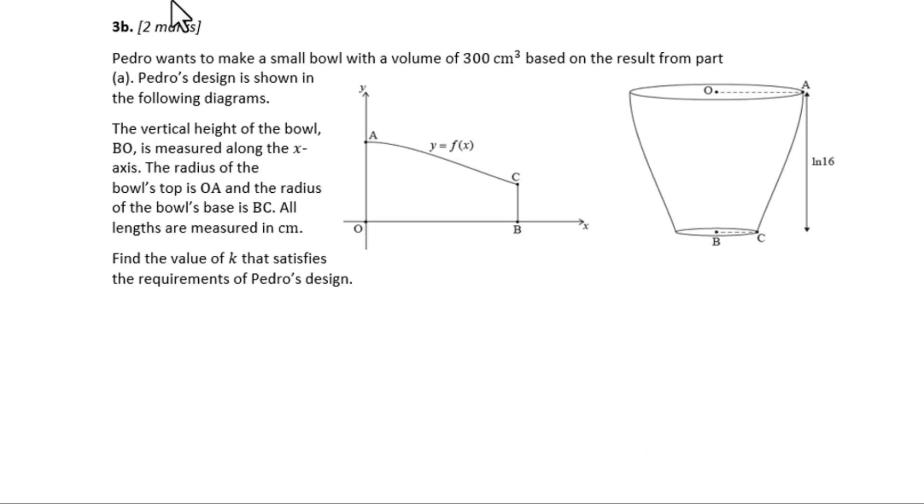Pedro wants to make a small bowl with a volume of 300 cm cubed based on the result from part A. Pedro's design is shown in the following diagram. The vertical height of the bowl BO is measured along the x-axis. The radius of the bowl's top is OA and the radius of the bowl's base is BC. All lengths are measured in centimeters. Find the k that satisfies the requirements of Pedro's design.